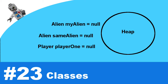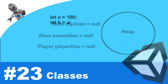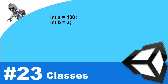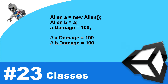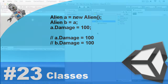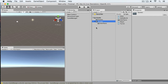Before we dive into the demo, let's talk about the difference between copying a value type and copying a reference type. When you copy a value type by assigning it to another variable, you're copying that value — those two values are independent of each other. Whereas when you copy a reference, those two variables are still pointing to the same object, meaning if you change a property in the first variable, the second variable will reflect that change.